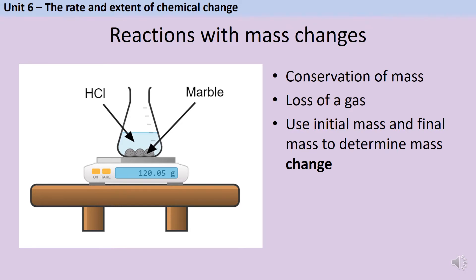We need to write down what the initial mass of the reaction vessel is, and then monitor this over time, and we'll see it decrease. We can use that initial mass and the masses that we've written down throughout the experiment in order to determine the mass change. And this can be used to work out the rate of reaction.